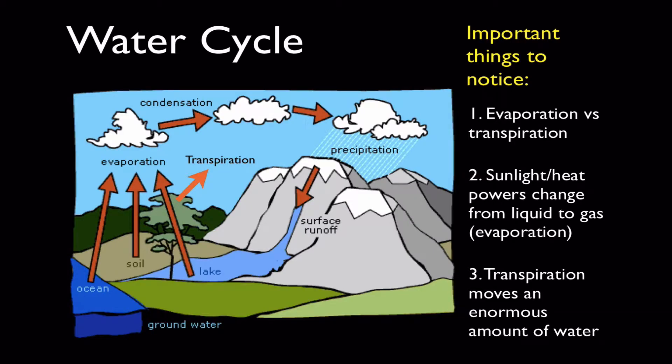Let's start with the water cycle, it's probably the simplest and most familiar to you. Important things to notice about the water cycle is the idea of evaporation versus transpiration. Evaporation is when water leaves soil, oceans, lakes, or streams, evaporates into the air, condenses in the clouds, and falls back as rain.